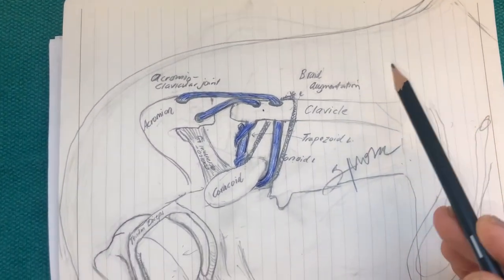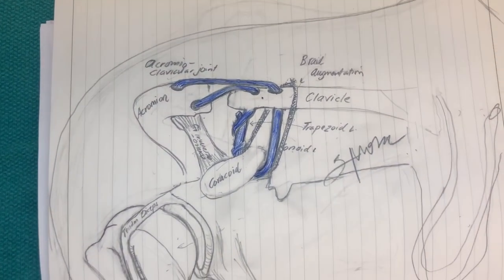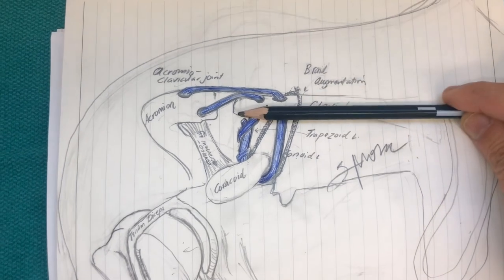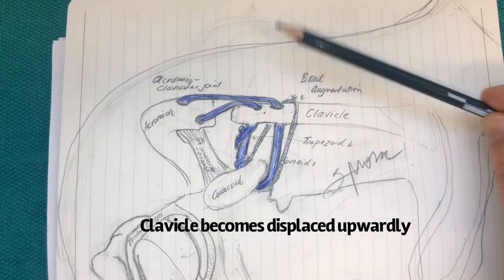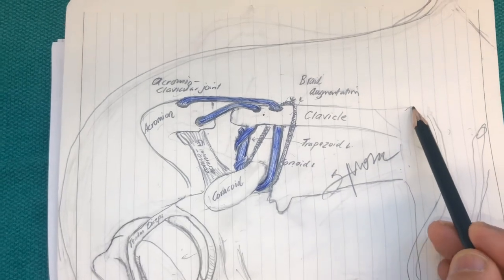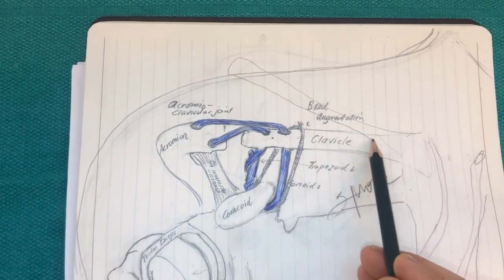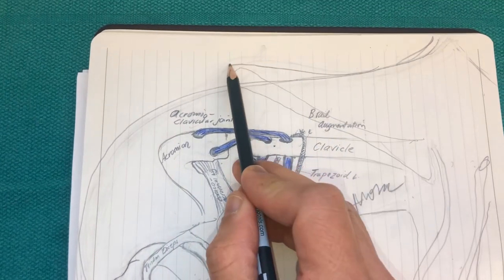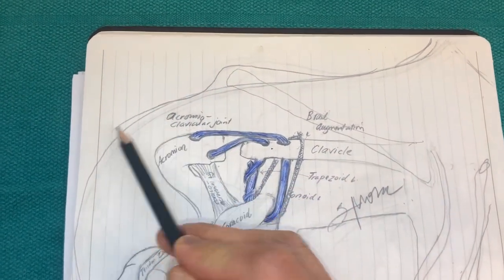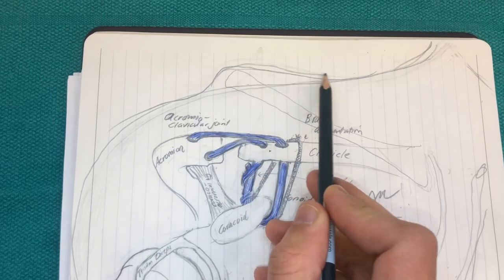So when a patient sustains an AC joint separation, what happens is the clavicle is displaced upward like this. I usually see patients with a big bump on top of their shoulder. Why is the bump there? Because the clavicle is displaced upward and it's pushing up on the skin like this.